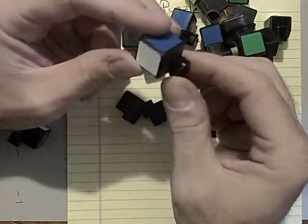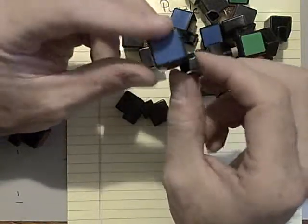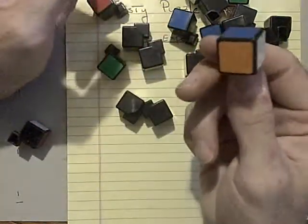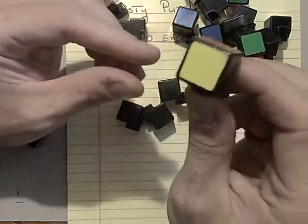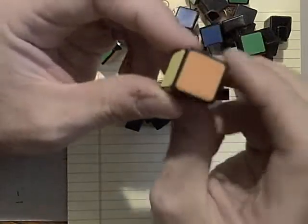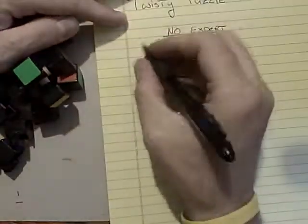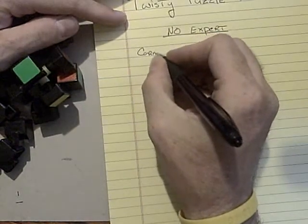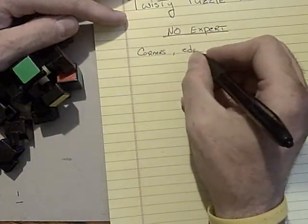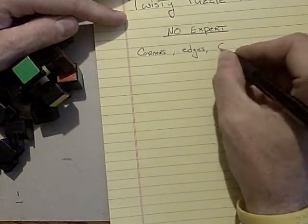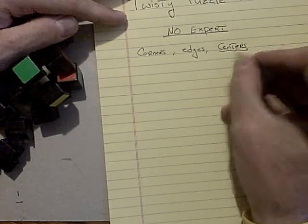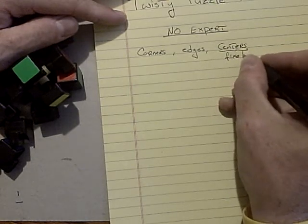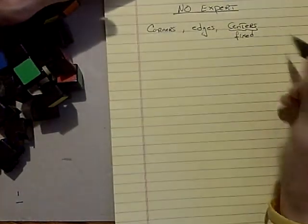Also, notice that some of the pieces have three colors on them. So they're corner pieces, and they're always a corner piece. And the other type of piece has two colors, and it's an edge piece. So, we have corners, we have edges, and we have centers. And these are fixed. The centers can't move. And the corners and edges don't turn into one another.